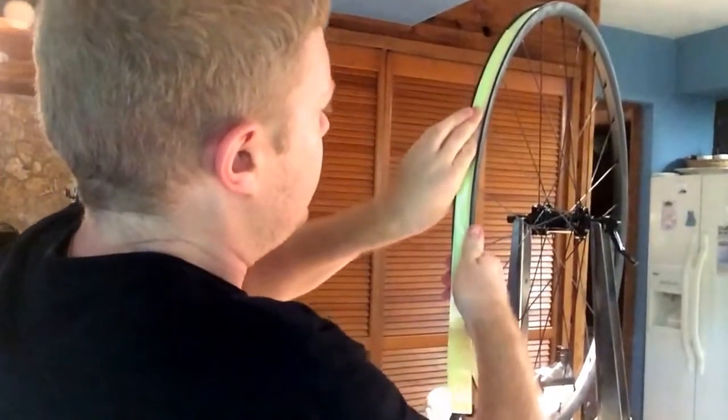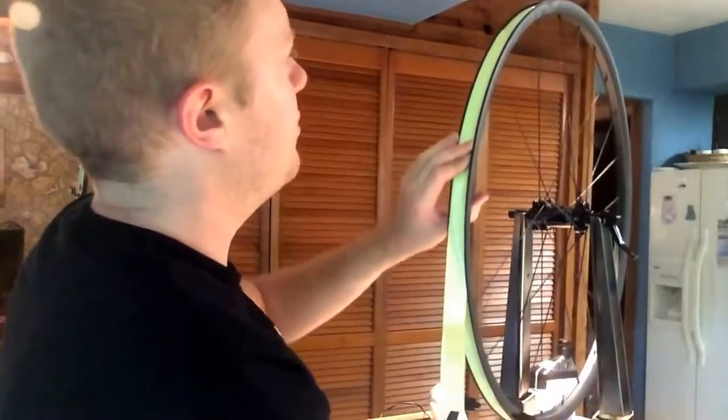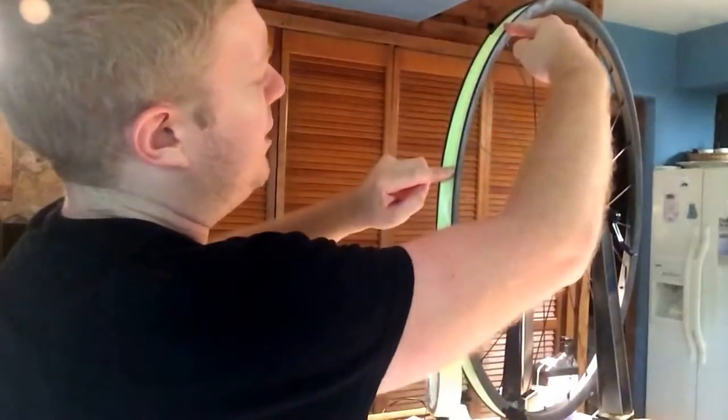Again, it's all about getting a tight seal with this tubeless stuff. But once you've done that, you can see it overlaps from here to here. That's plenty.